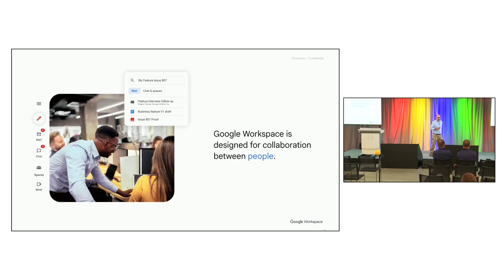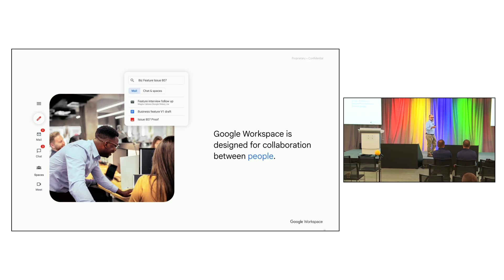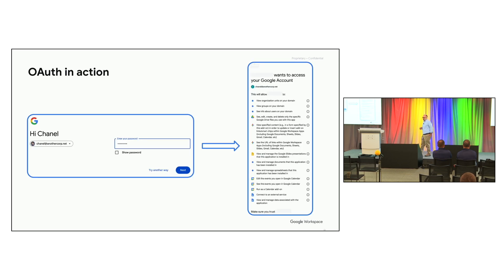Workspace is designed for collaboration between people. Whether it's Gmail, Calendar, Drive, or Docs, they're all centered around humans doing things. But sometimes your integration or application wants to do something on behalf of some of your users. And although I'm sure you're all familiar with the default OAuth consent screen — how many of you have used that?